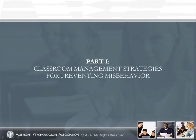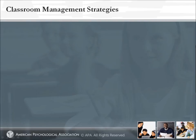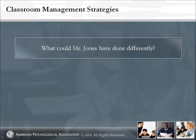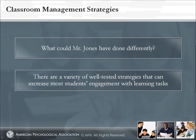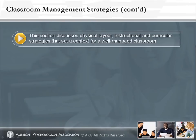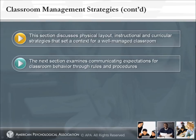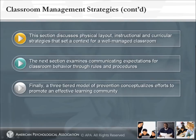Part 1: Classroom Management Strategies for Preventing Misbehavior. What could Mr. Jones have done differently to improve his classroom situation? There are a variety of well-tested strategies that can increase most students' engagement with learning tasks while reducing the likelihood of problem behaviors. This section begins with a description of the physical layout and instructional and curricular strategies that set a context for a well-managed classroom. The next section examines strategies for communicating expectations for classroom behavior through rules and procedures. Finally, a three-tiered model of prevention will be highlighted as a framework to conceptualize efforts to promote an effective learning community.